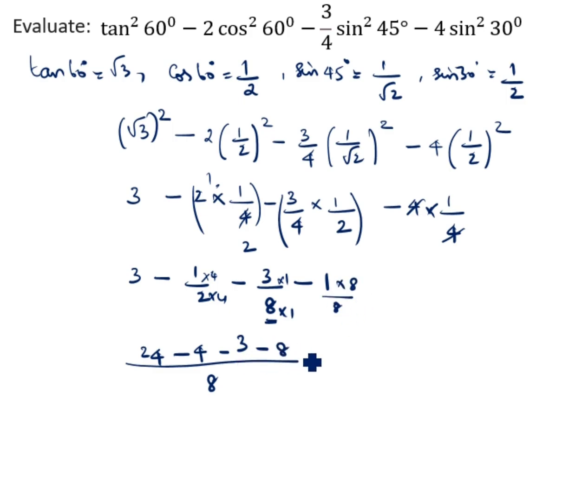24 minus - you have to add 8 plus 3 is 11, 11 plus 4 is 15. 24 minus 15 divided by 8 equals - 24 minus 15 is 9. 9/8 is the answer.